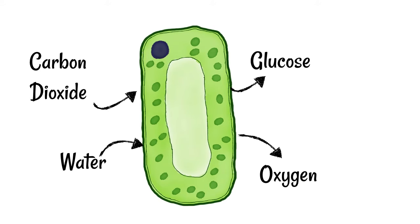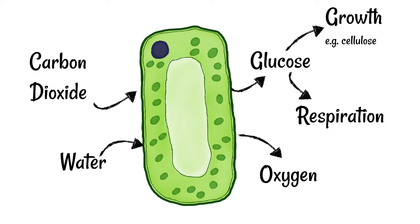Some of the glucose is going to be used for the growth of the plant and it's going to make things like cellulose. Some of that glucose is going to be used in the process of respiration which is there to generate ATP, which is the energy currency of organisms.